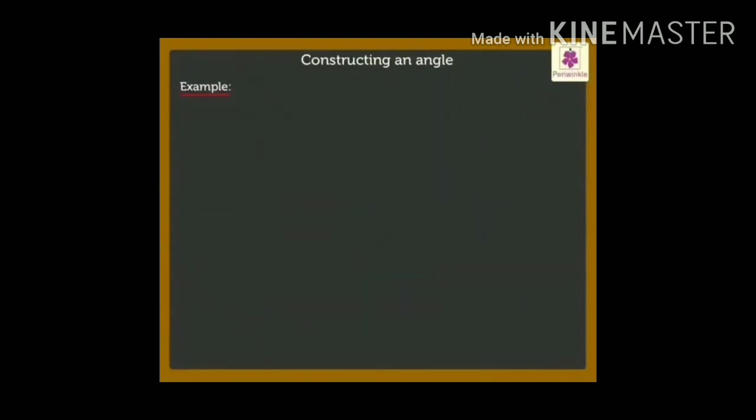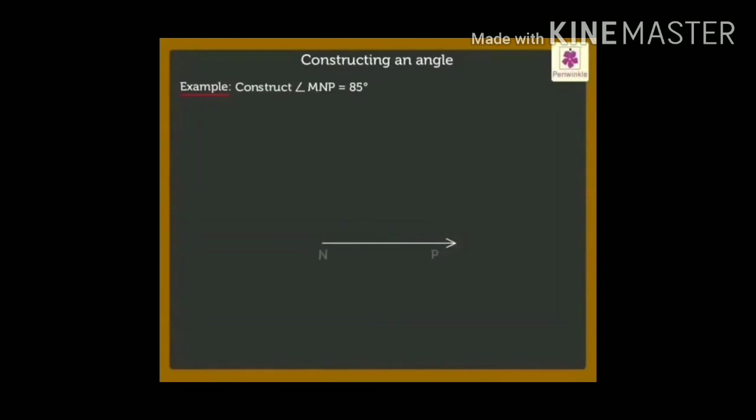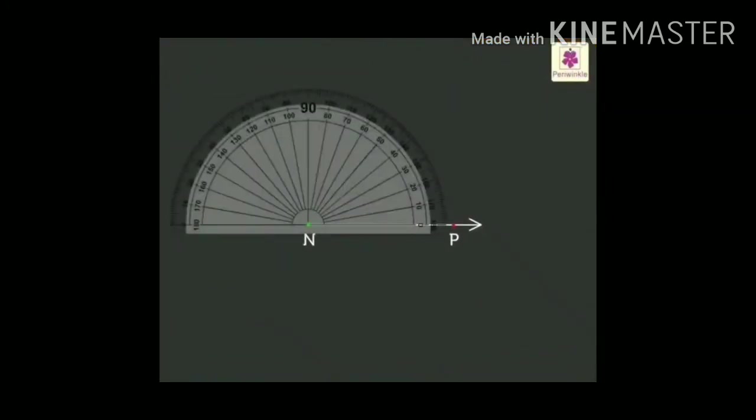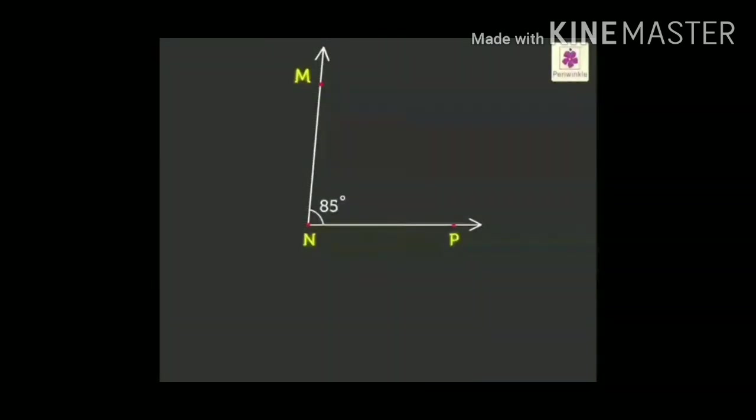We can have one more example for that. Construct an angle MNP 85 degree. Again, draw a line, base line with the help of scale. N, P. Keep your protractor there. Mark the point 85 degree from the right side. Write there M. Move your protractor and join with the help of scale. We will find MNP measures 85 degree.